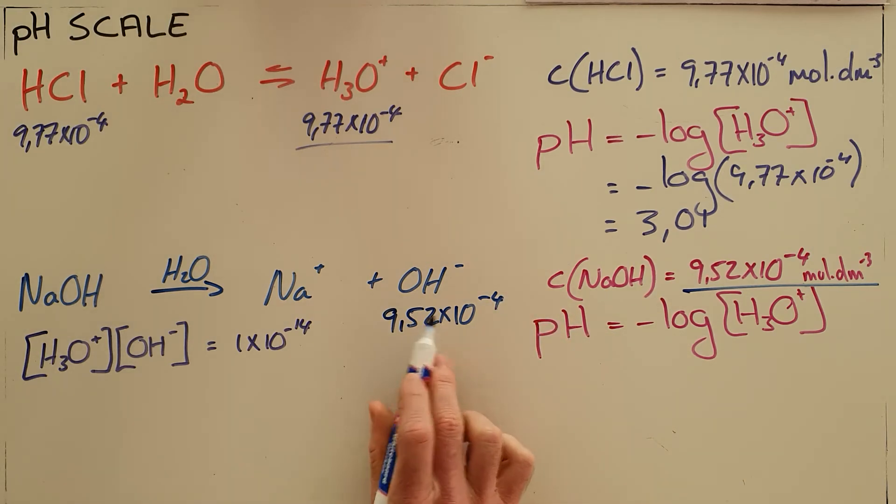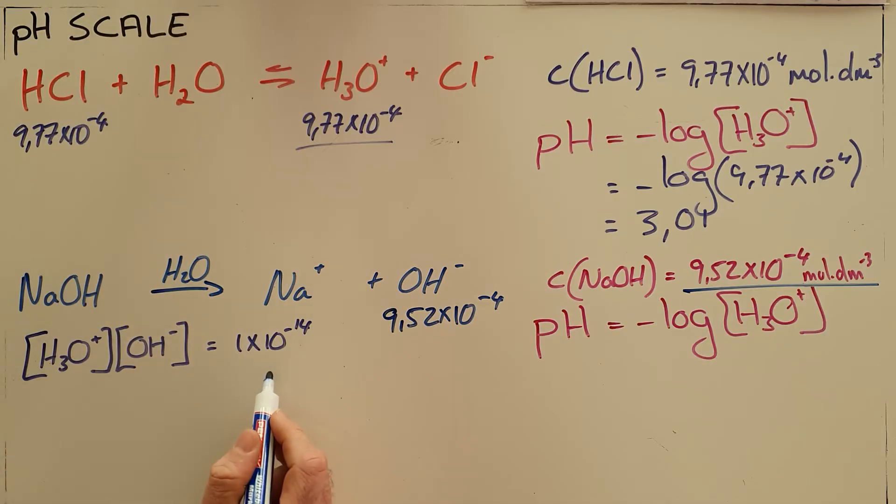But that is our hydroxide concentration and not the hydronium concentration, so there we use the ionic product of water, which is this identity that says the concentration of the hydronium multiplied by that of hydroxide will always be 1 times 10 to the minus 14 in water at 25 degrees Celsius.